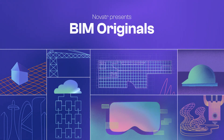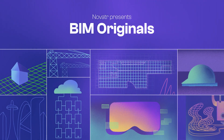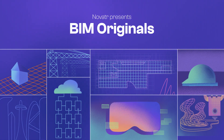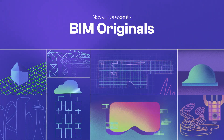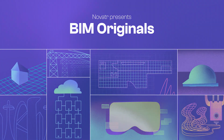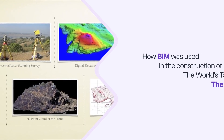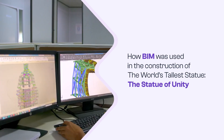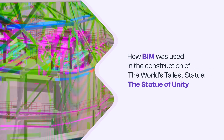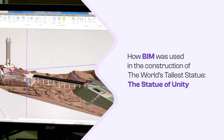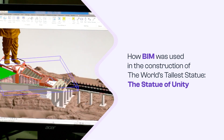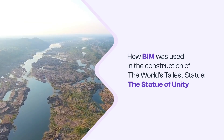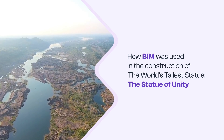Welcome to BIM Originals, a series aimed at answering some of the most burning questions around BIM. In this video, we will talk about how BIM was used in the construction of the world's tallest statue, the Statue of Unity. So buckle up and let's learn something insightful today.